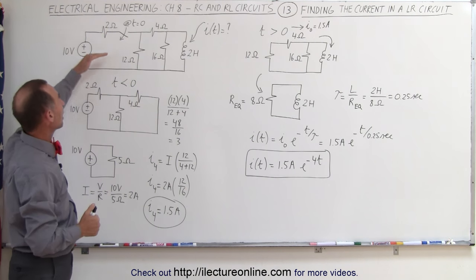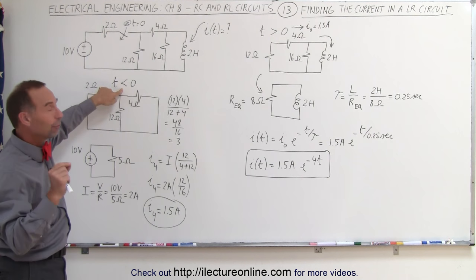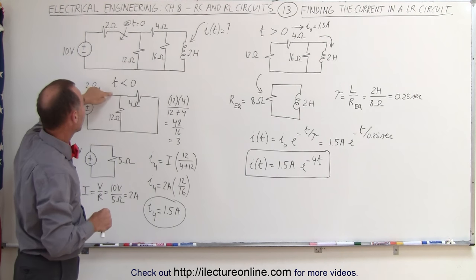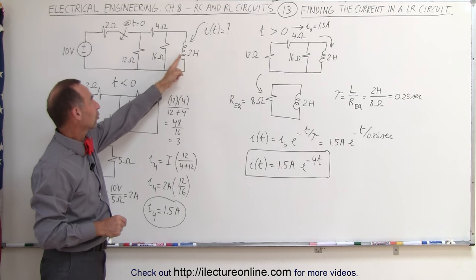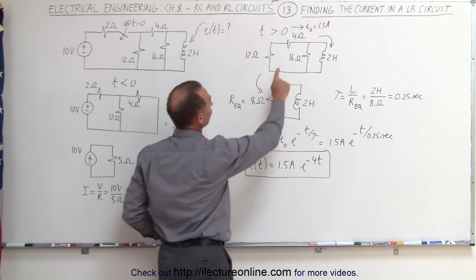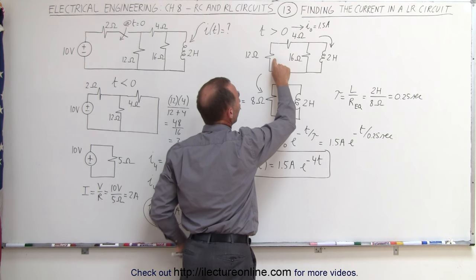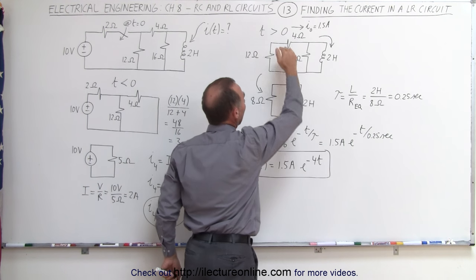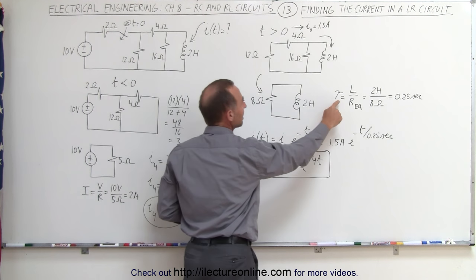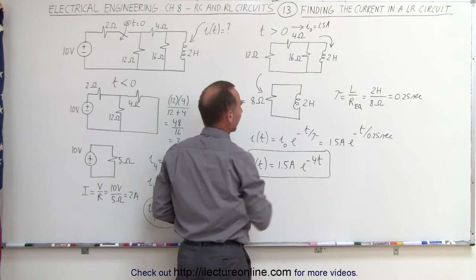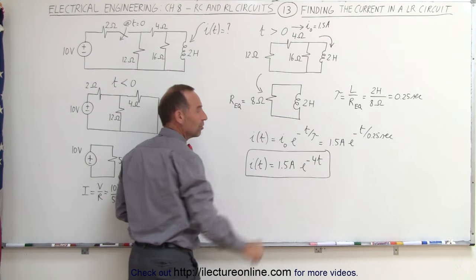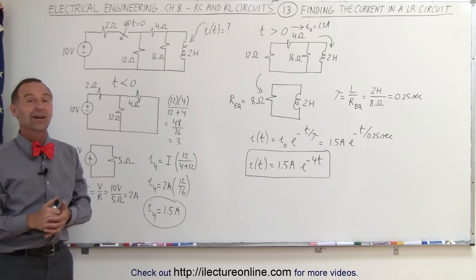To summarize the methodology: take your initial circuit and analyze it before the switch is opened, at time less than zero. Draw the equivalent circuit with the switch closed — the inductor becomes a short circuit and the parallel resistor branch becomes open. Find the total current, then use the current divider to find what portion goes to the 4 ohm resistor. Then draw the equivalent circuit after the switch is opened, find the equivalent resistance, compute the time constant, and use the general equation with the initial current and time constant to describe the current through the inductor.